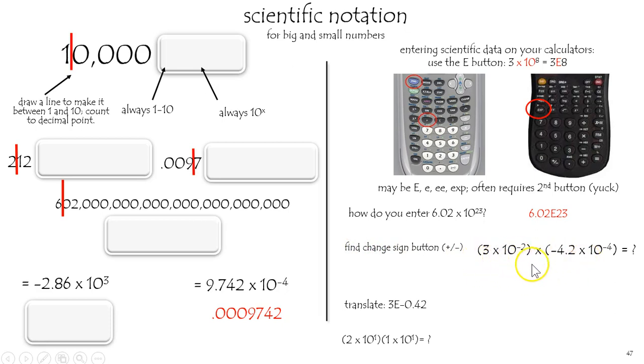If we want to do some multiplication, that's not a big deal. 3 times 10 to the minus 2 multiplied by minus 4.2 times 10 to the minus fourth. Well, what are the keystrokes? 3e minus 2 multiply negative, not subtract negative, which is right there, 4.2e negative 4.